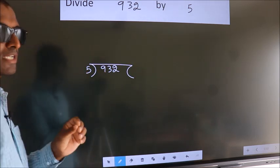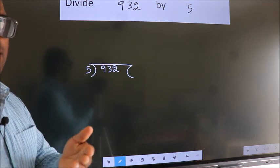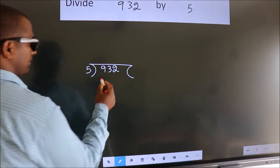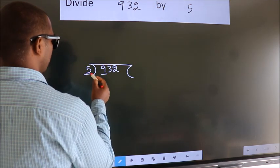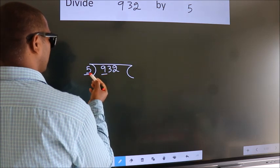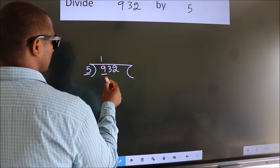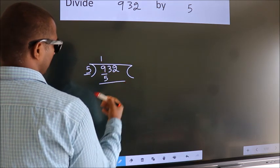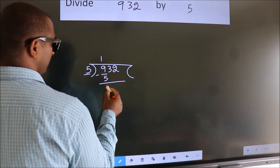This is your step 1. Next, here we have 9, here 5. A number close to 9 in 5 table is 5 once 5. Now we should subtract. We get 4.